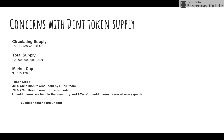My biggest concern as a Dent token investor is the supply of coins. The total Dent token supply is around 100 billion tokens and the current circulating supply is 10 billion. The token model is 30% held by the team and 70% for the crowd sale. Whatever is not sold during the crowd sale will be held in inventory and released 25% every quarter.